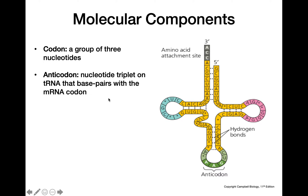We also have something called the anticodon, which is the nucleotide triplet on the tRNA that's going to base pair with the codon. It's this base pairing that dictates what amino acid is going to be incorporated into the growing polypeptide chain.